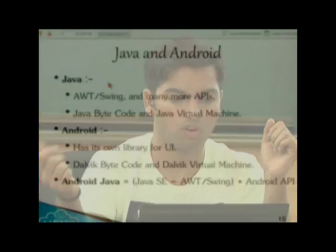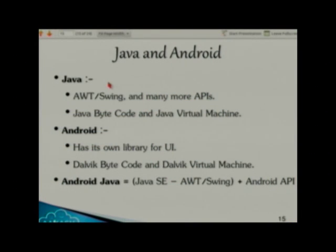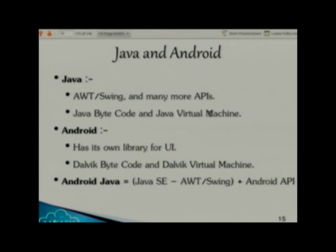In Java, we have AWT and Swing for user interfaces. But Android does not support AWT and Swing because we are talking about touchscreen devices that need extensive touch functionality, so Android has its own library for user interface. In Java, we have Java bytecode and the Java virtual machine. But in Android, we have Dalvik bytecode and the Dalvik virtual machine.